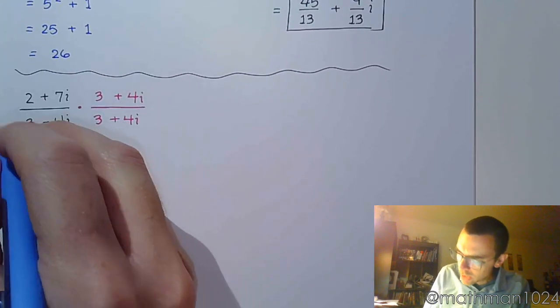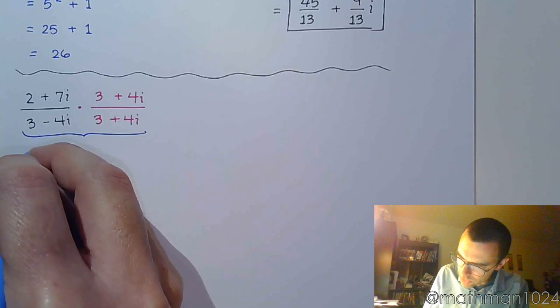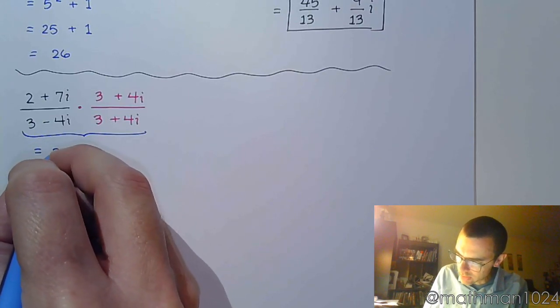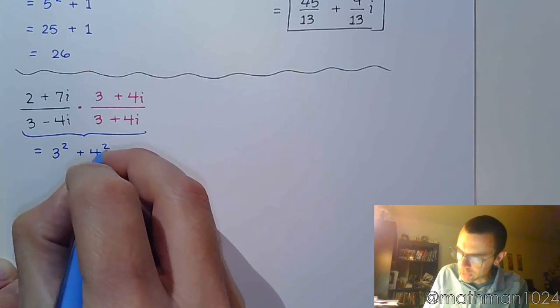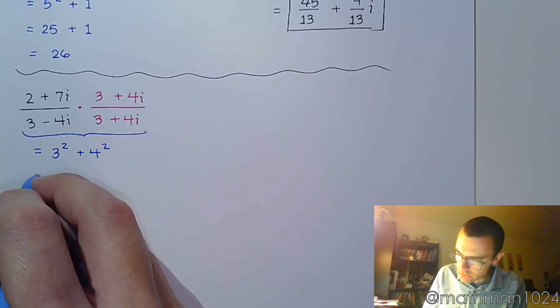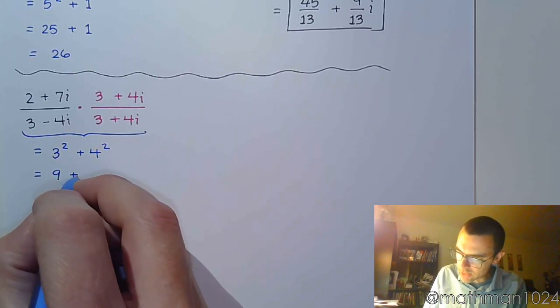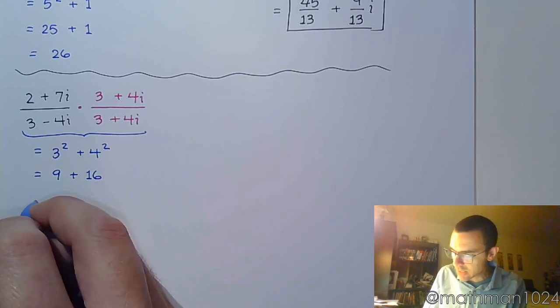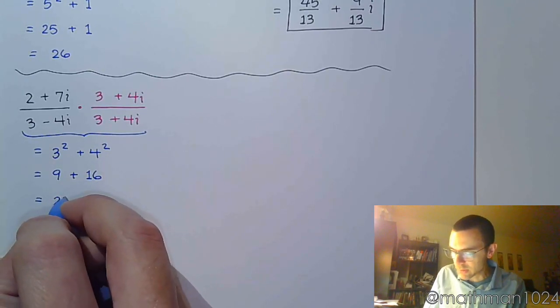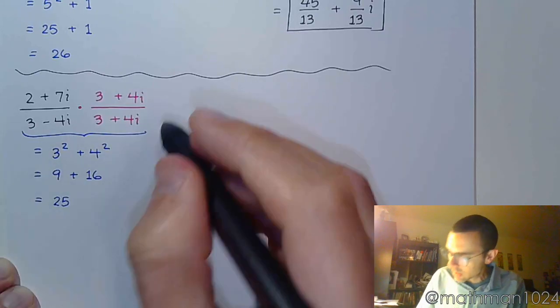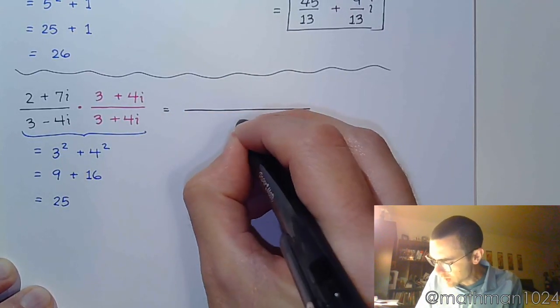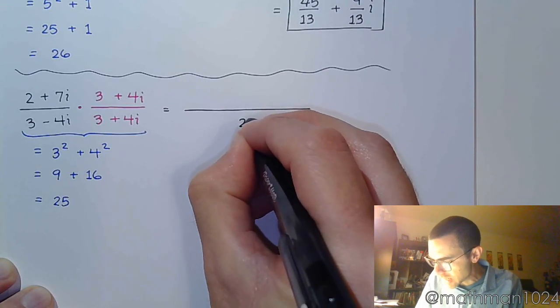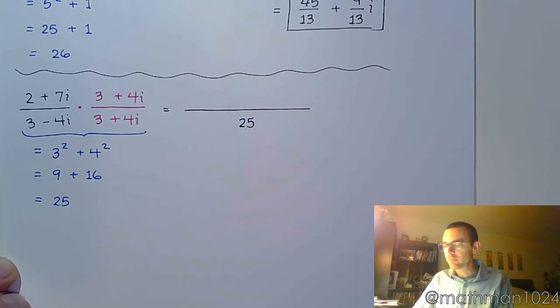The whole reason for this is so that we can use that special shortcut. That's going to give us 3 squared plus 4 squared. Working this out piece by piece, that's 9 plus 16, and that equals 25. So, big fraction, everything is divided by 25.